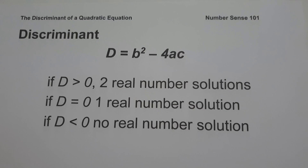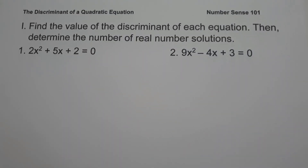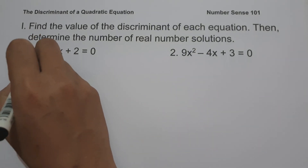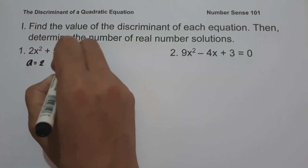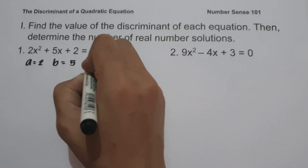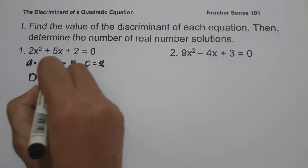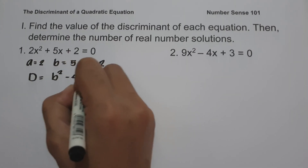Let's start with some examples. We are going to find the value of the discriminant of each equation and determine the number of real number solutions. On number one, we have 2x squared plus 5x plus 2 equals 0. To determine the number of real number solutions, let us find the discriminant first. We identify the value of A, that is 2; B, that is 5; and C, that is 2. The formula for the discriminant is D equals B squared minus 4AC.